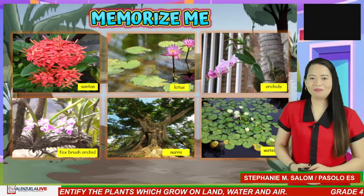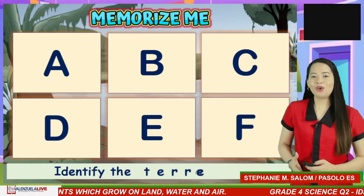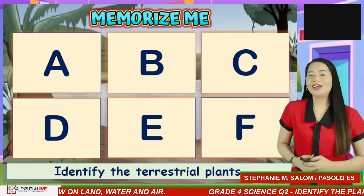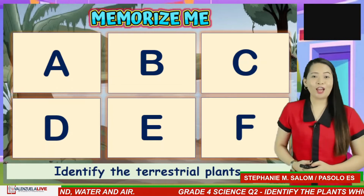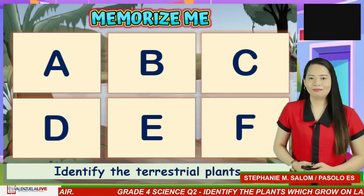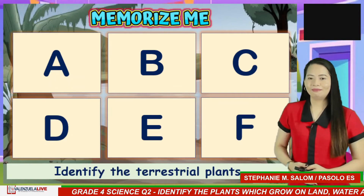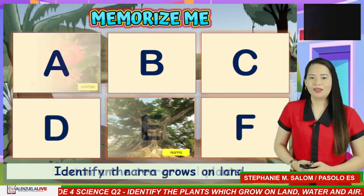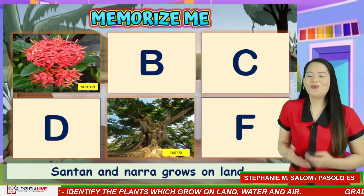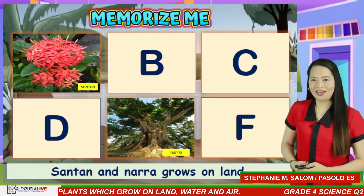Time's up! Identify which of them are terrestrial plants — those plants that grow on land. Type your answer in the comment box. If you answered letter A and E — well done! Santan and Narra grow on land.